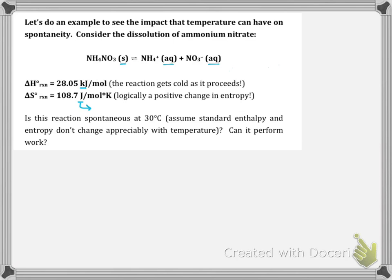One thing you have to be really careful about with these numbers is that delta H and delta S are generally reported in different units. So if we ever want to combine them into one equation, we have to get them into the same units. I'm going to convert my delta S value into kilojoules per mole kelvin, so that whenever I calculate delta G, it will come out in terms of kilojoules.